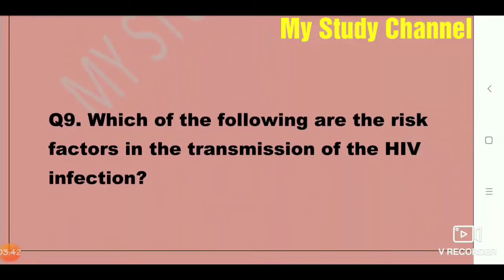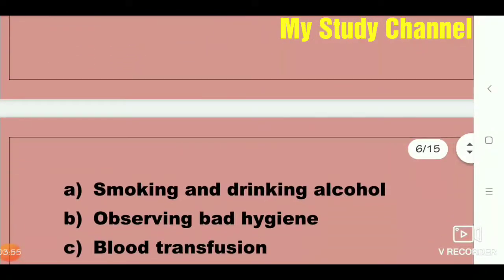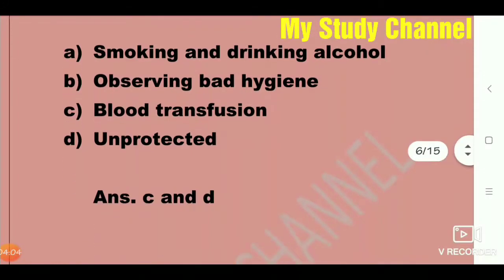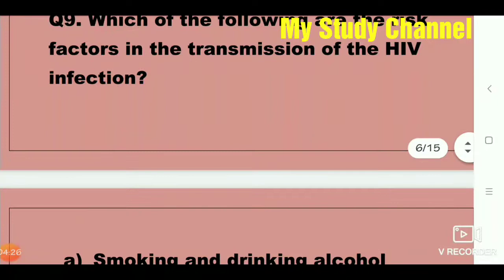Next question: Which of the following are the risk factors in the transmission of HIV infection? Option A is smoking and drinking alcohol, B is observing bad hygiene, C is blood transfusion, and D is unprotected sex. Here options C and D are correct — blood transfusion and unprotected sex are risk factors for HIV transmission.